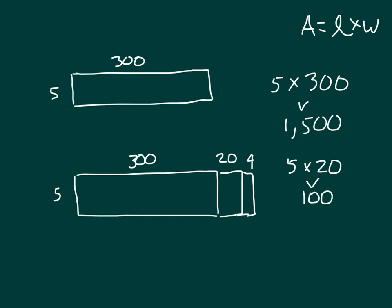And what would the other one be? That would be 5 times 4, and 5 times 4 is 20.